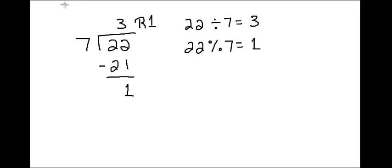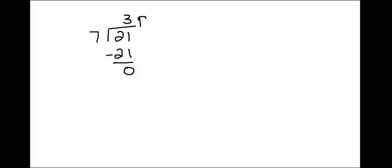One of the things you can use the modulus for is to check for divisibility and to see if one number is a factor of another number. For instance, 21 divided by seven goes in three times with a zero remainder, which means that this number divides evenly into this number. So what we can do in computer science is ask the computer if one number modulus another number is equal to zero, and that will tell us if that number is a factor of another number.